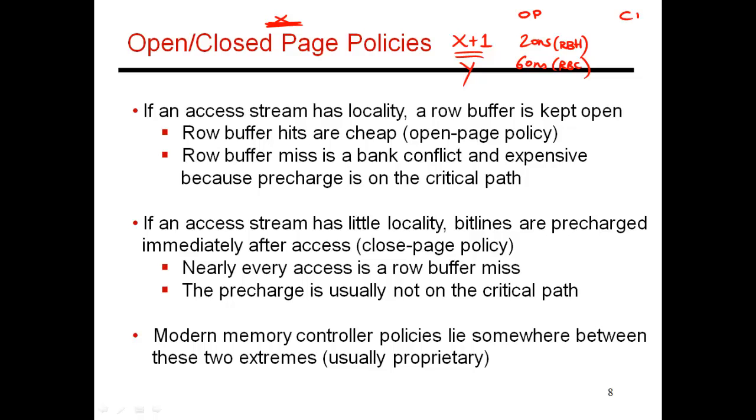So this is known as the close page policy, where as soon as I return cache line x, I'm pre-charging the bit lines and destroying the contents of the row buffer. So now if I access y, a different row altogether, this becomes an empty row access. And that's only 40 nanoseconds. And likewise, if I were to access x plus 1, so if I do access some neighboring element, since this is again going to be an empty row access, this also takes 40 nanoseconds.